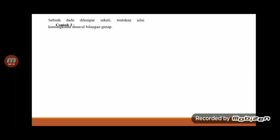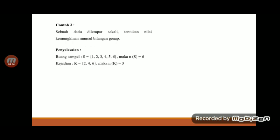Terus untuk soal yang ketiga, sebuah dadu dilempar sekali. Tentukan nilai peluang atau kemungkinan muncul bilangan genap. Penyelesaiannya ruang sampel dari sebuah dadu berarti ada 6. Ruang kejadiannya adalah kemungkinan muncul bilangan genap. Berarti 2, 4, 6, berarti ada 3.